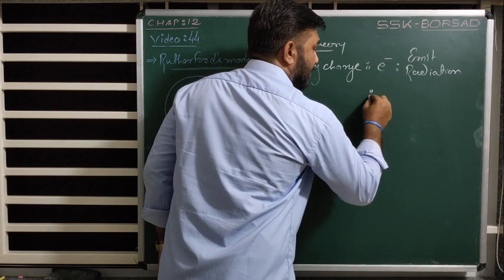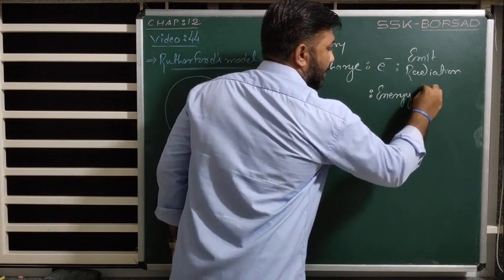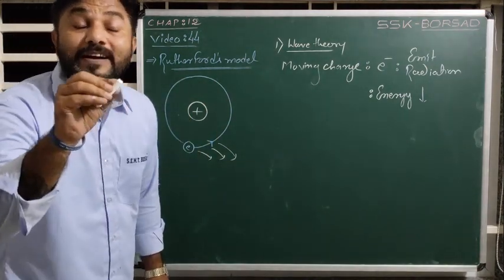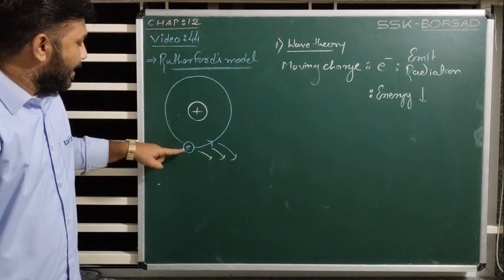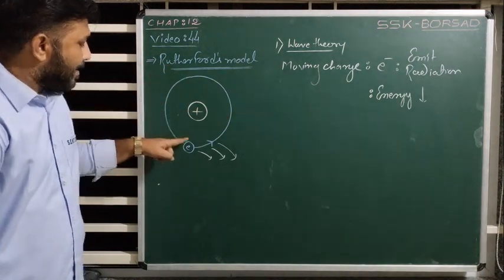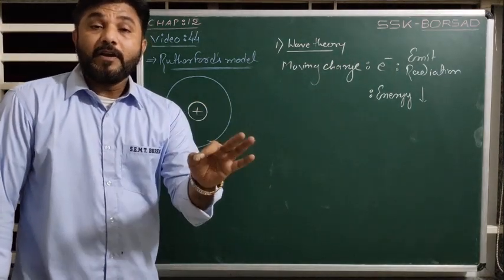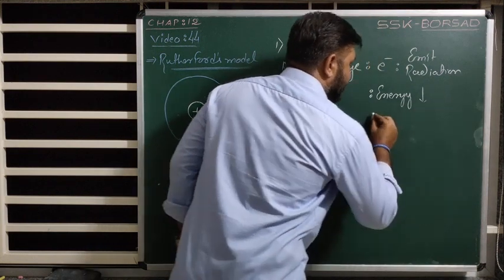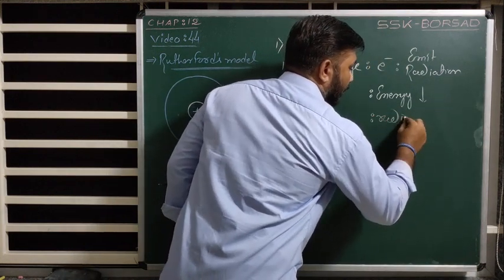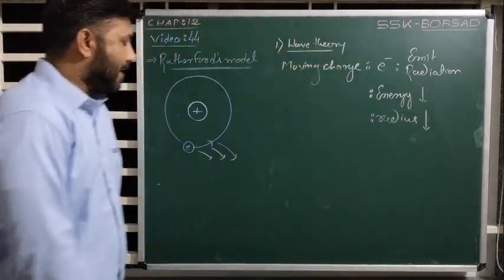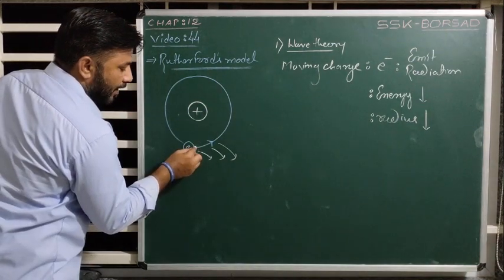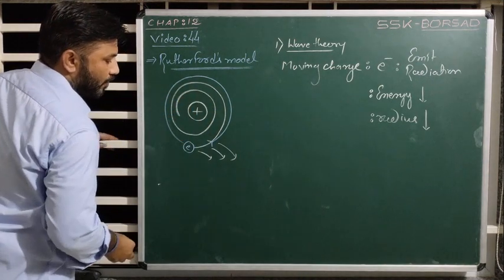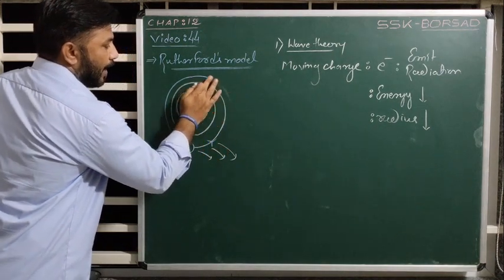While these electrons are moving, they emit radiation, and if they emit radiation they lose energy. Because of this radiation, the energy decreases. If energy decreases, the radius also decreases. So according to Rutherford, the electron revolving in a circular path will not follow a circular path — instead of following a circular path, the electron will follow a helical path.